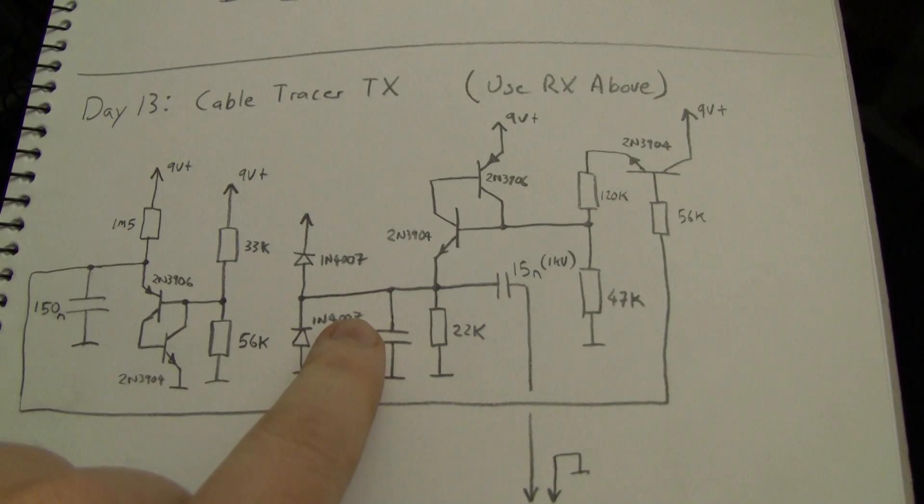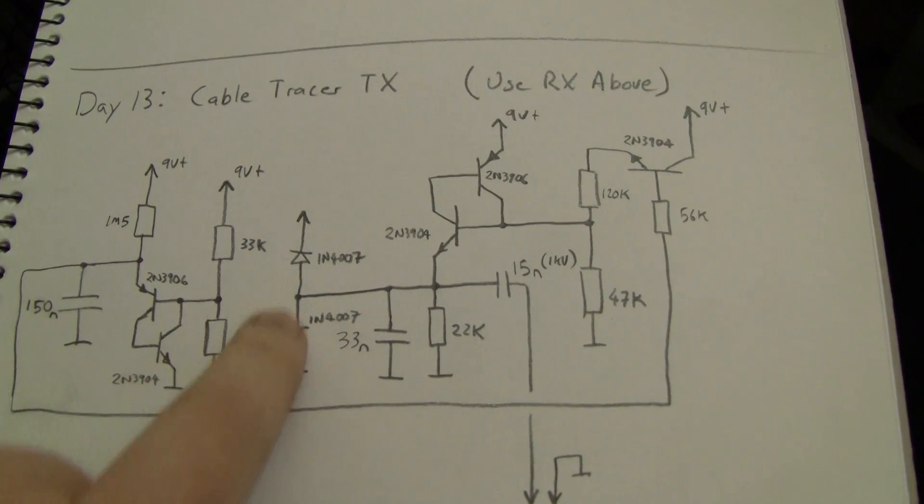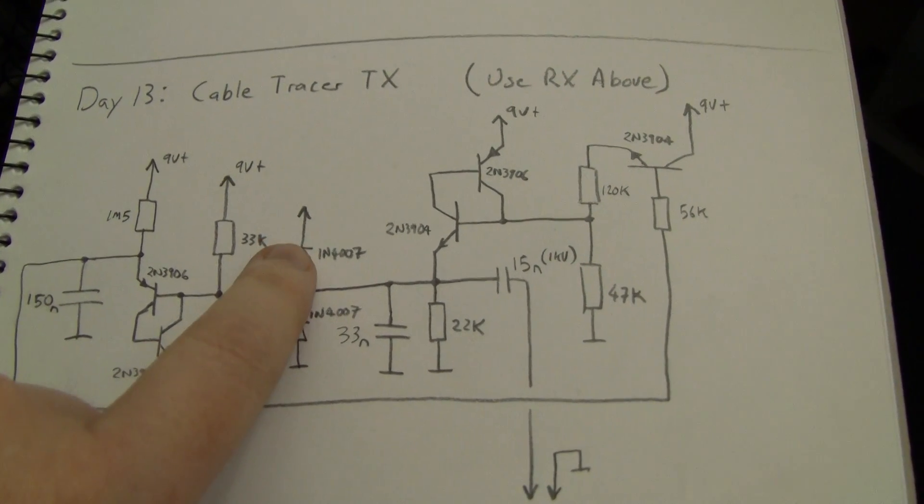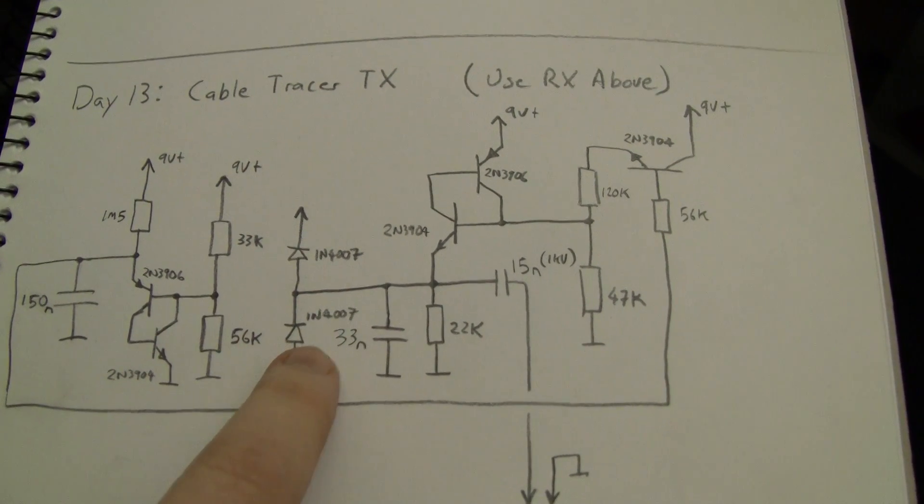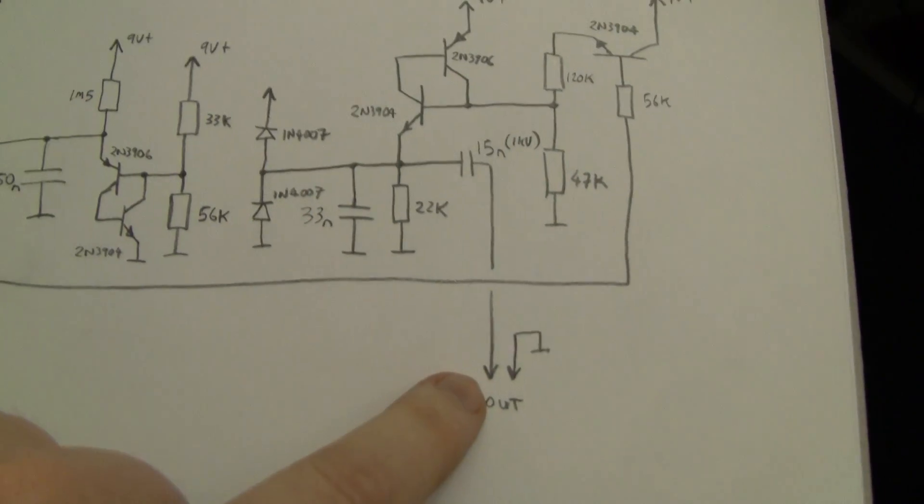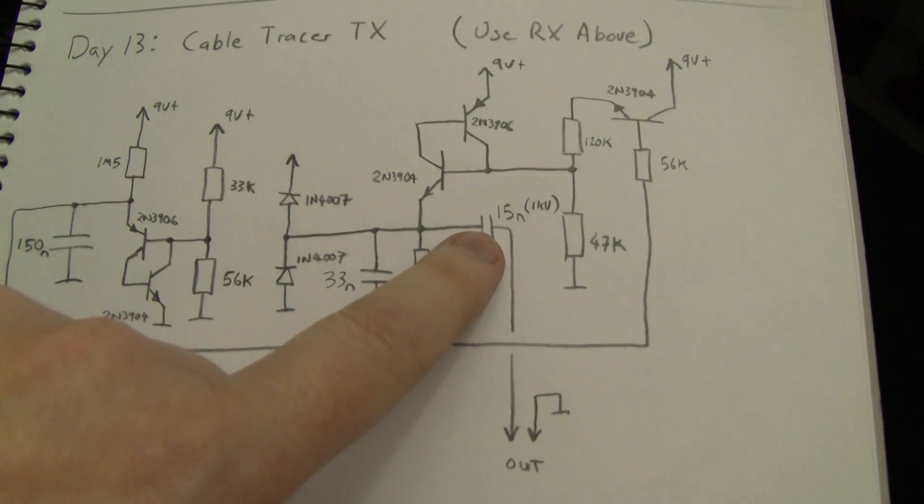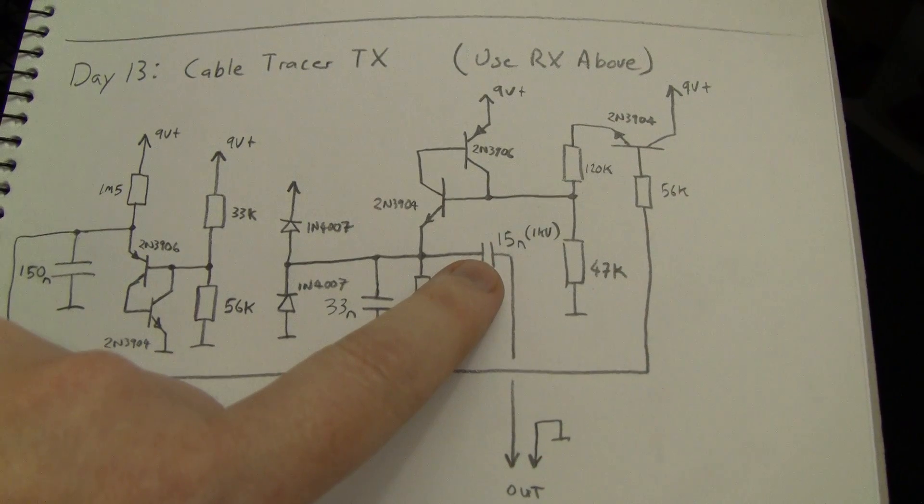And the rest of it's really just pretty basic protection. These diodes, 1N4007, 1000 volt diodes, are there purely to protect the circuit if you connect it to something nasty. This 15 nano capacitor should be a kilovolt capacitor if you've got one.